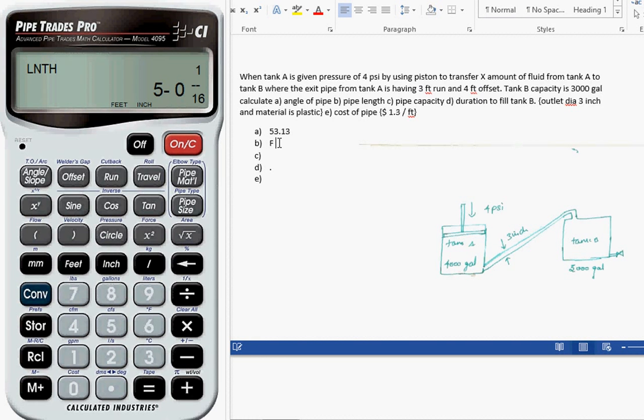5 feet 0.16 inch. Third, we have to calculate the capacity for this pipe. Let me calculate that for 3-inch pipe size. The area is 7.932. For total length of 5 feet, let me multiply with 5 feet. This is the capacity of the pipe.